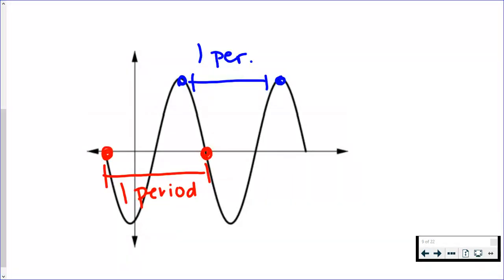Now, it does not matter which points you're going between because the period is the same across the entire graph. So the red line that I drew and the blue line that I drew should be the same distance. The period is the same across the entire graph.